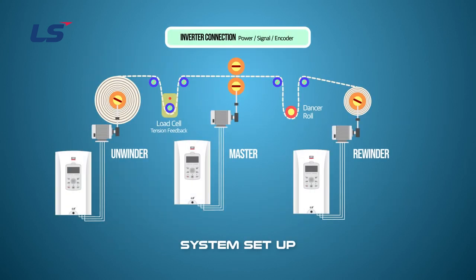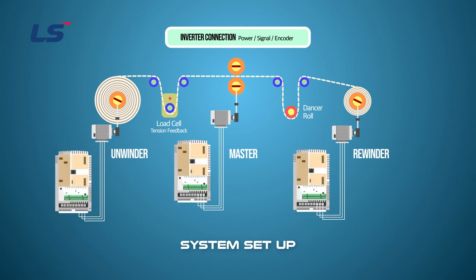Basically, after completing the inverter power connection, signal and encoder connection are performed. The inverter of the master unit controls V by F, so the encoder is not used. The inverter applied to the winder and unwinder requires encoder connection because it controls vectors.